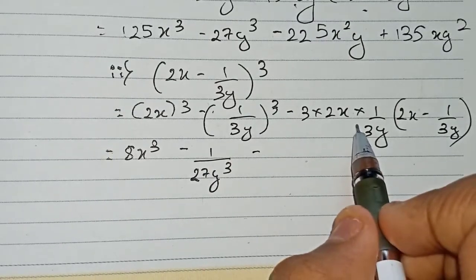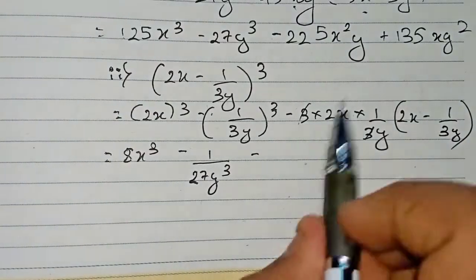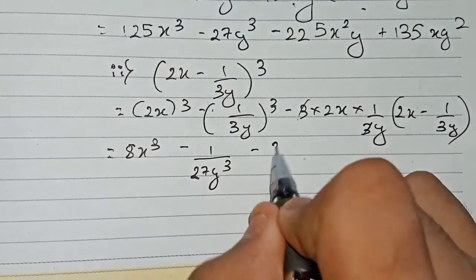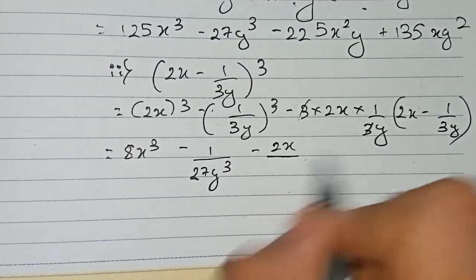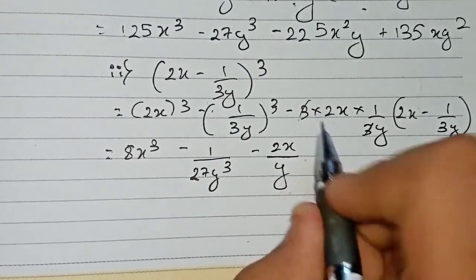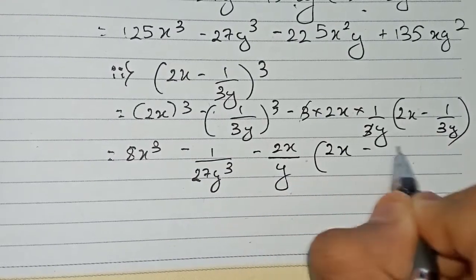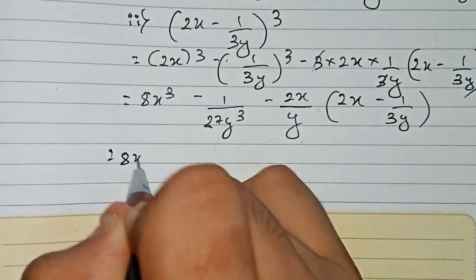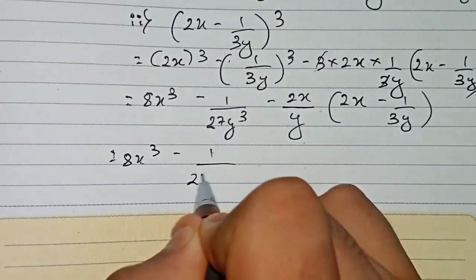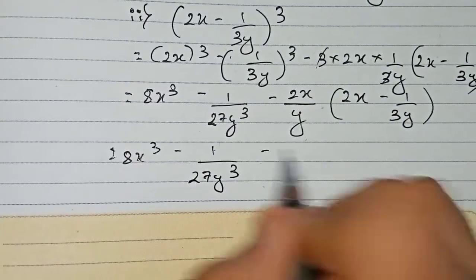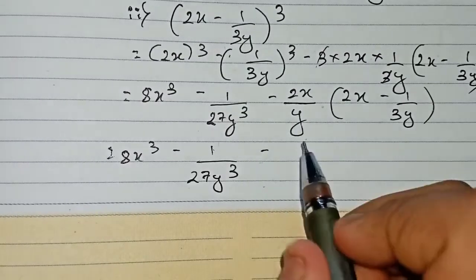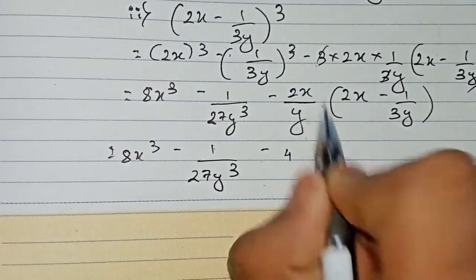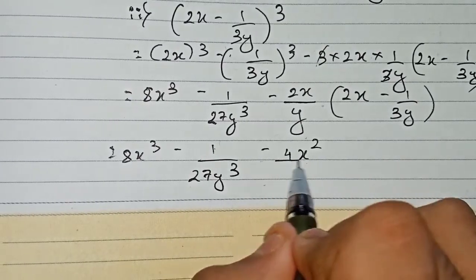For the next term: 3 into 2x into 1 by 3y — here the 3 and 3 cancel, leaving only 2x into 1, so minus 2x by y multiplied by 2x minus 1 by 3y. Expanding: 2 into 2 is 4, x into x gives x square by y, giving minus 4x square by y. Then the second term gives plus 2x by 3y square.